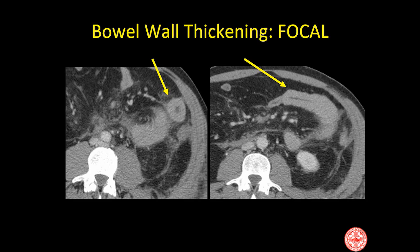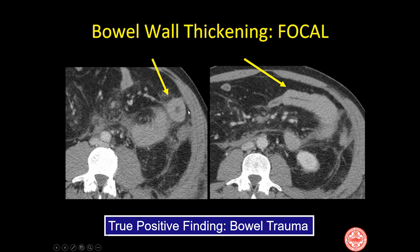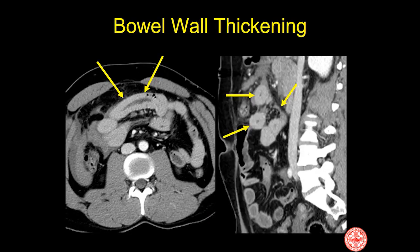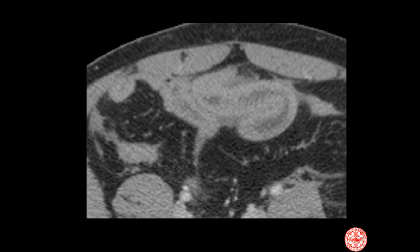Here we have one patient where axial images demonstrate a focal area of thickening in a loop of small bowel. Notice also that there is stranding and hematoma in the mesentery — a combination of findings highly specific for bowel trauma, proven at laparotomy. Another similar patient has a focally thickened loop of jejunum, hemoperitoneum, and blood in the mesentery. Notice in the sagittal reformation the triangular accumulations of blood between the leaves of the mesentery in the same area as the thickened loop — again, a very specific combination indicating bowel injury.